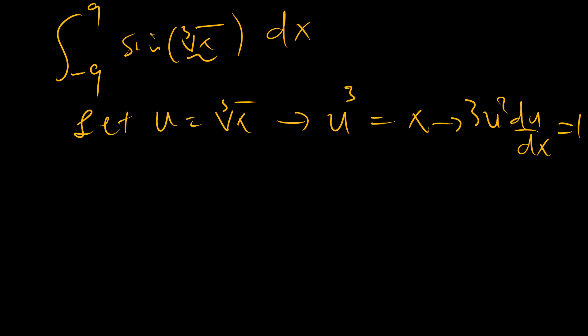The integral from x equals negative 9 to x equals 9 of sine of the cube root of x means that we can try to substitute that ugly part by setting u equal to cube root of x, such that u cubed equals x, and from here we can see that 3u squared du equals dx, meaning that we can substitute for dx with 3u squared du.